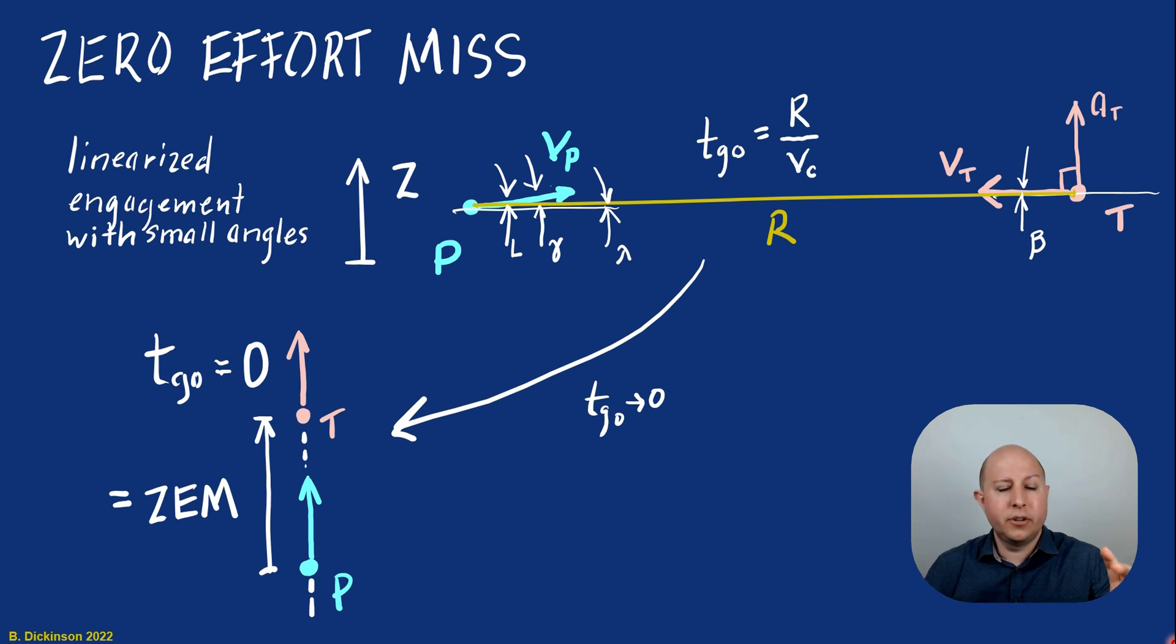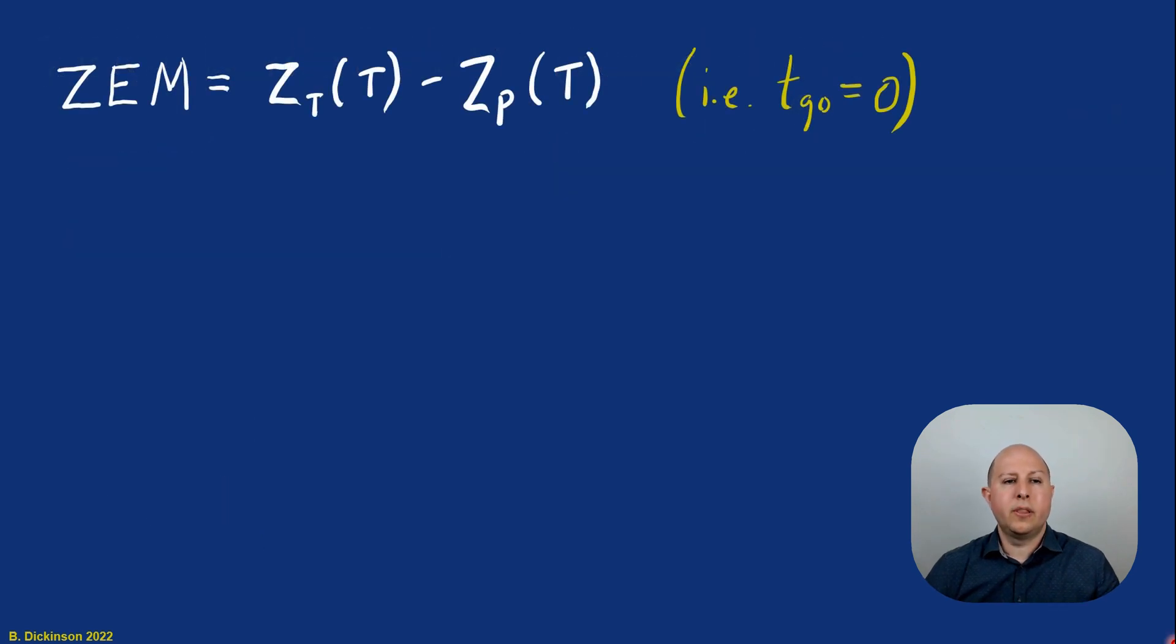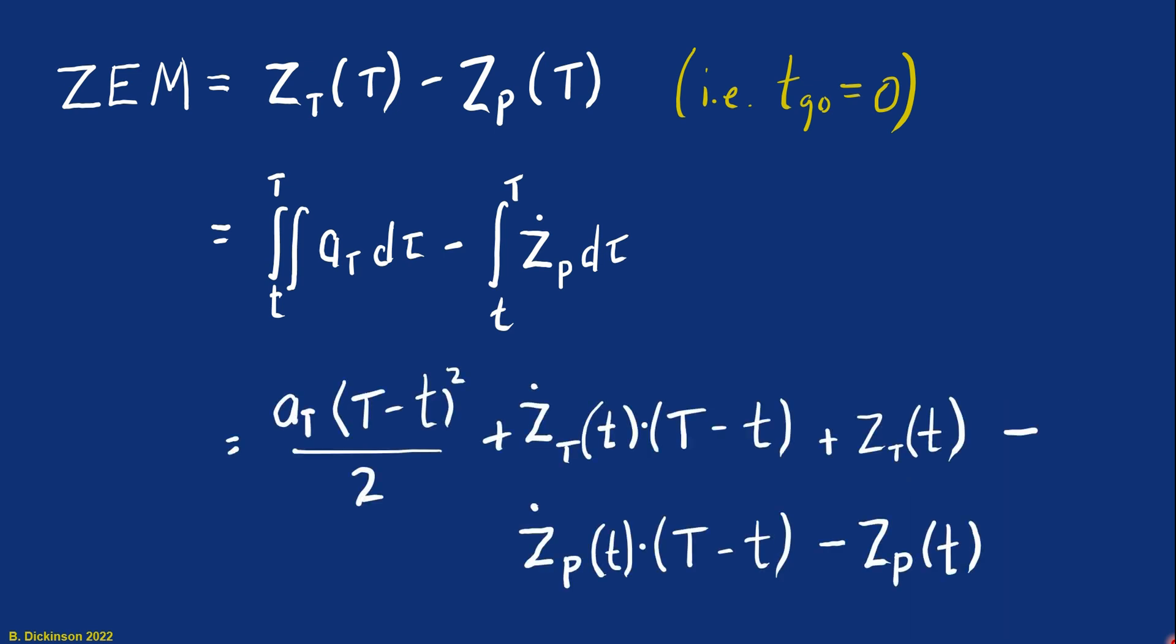Zero effort miss needs to be updated because for augmented proportional navigation, we have an accelerating target. So our objective is to determine what this ZEM is. We can determine the position of the target and the position of the pursuer at the final time, T, by simply integrating the target acceleration, where the target acceleration is constant, and the pursuer vertical component of its velocity, the z dot sub p. Note that z dot sub p at the present time, lowercase t, that's going to be assumed to be a constant value as time to go approaches zero. That's a zero effort miss at that instant.